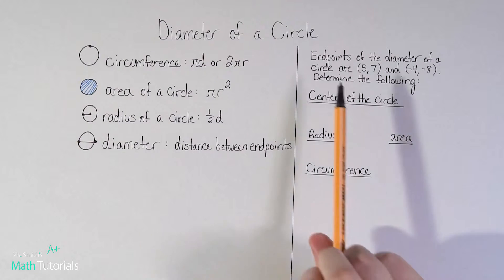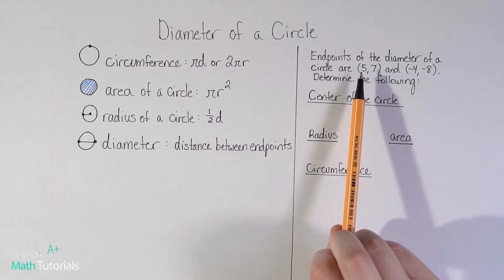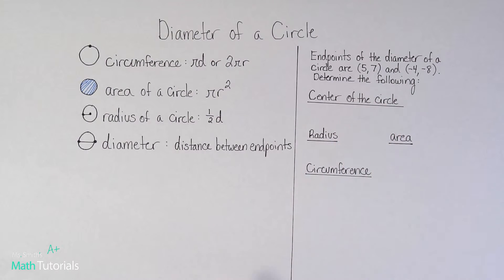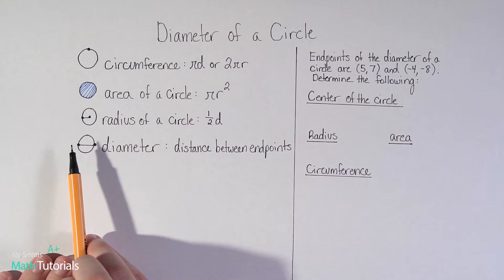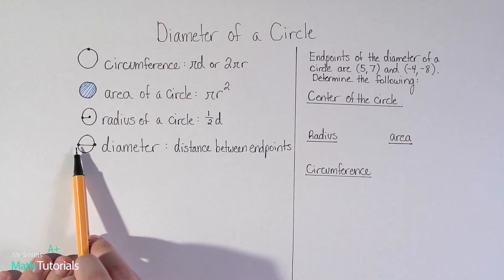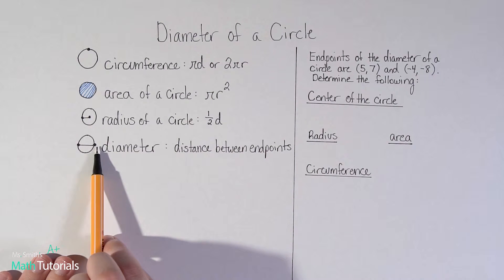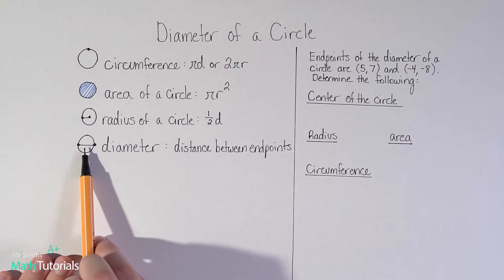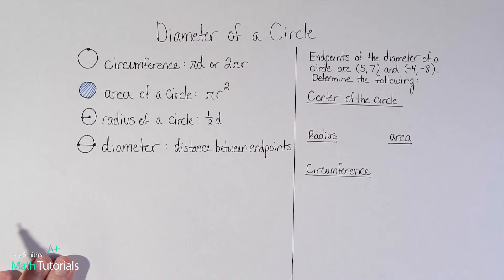So there's a little bit of circle jargon to kind of put in your tool belt. Let's see some of this in action. Endpoints of the diameter of a circle are (5, 7) and (-4, -8). Determine the following. So we're going to start with finding the center of the circle. So it gave us this endpoint and this endpoint, and it's saying it told us these are the endpoints of the diameter. So we want to know what would be the center of the circle. So what they're asking for is the midpoint, what would be the midpoint of these two points. So we would have to use our midpoint formula, which we just learned about in the last video.